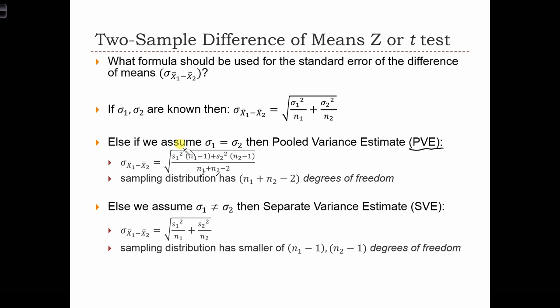In this case, if we are assuming a pooled variance estimate, then the sampling distribution is a t distribution with n1 plus n2 minus 2 degrees of freedom. Of course, if n1 plus n2 minus 2 turns out to be quite large, then we can actually use a z curve for the sampling distribution. So, if n1 plus n2 minus 2 is greater than 30, we just use z.